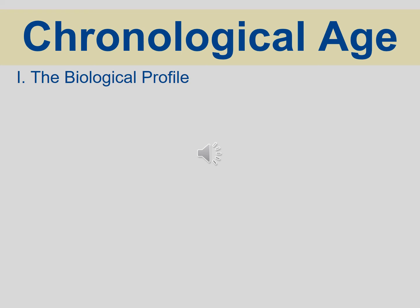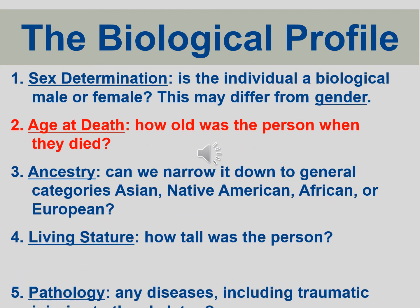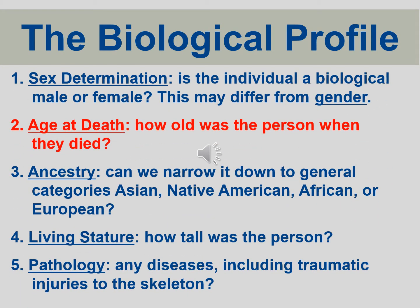We now move on to another aspect of the biological profile: age. Previously we worked on sex determination, and now we're going to look specifically at chronological age, or age at death. Before, we asked whether a skeleton belongs to a male or female individual, and we have to be careful with sex determination because we need secondary sexual characteristics to develop — either the skull or the pelvis, with the pelvis being the most accurate.